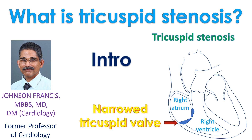Tricuspid stenosis is narrowing of the valve between the right atrium and right ventricle. The tricuspid valve prevents backflow of blood into the right atrium when the right ventricle contracts. The right atrium is the upper chamber which receives blood returning from the whole body. The right ventricle, the lower chamber, receives blood from the right atrium through the tricuspid valve and pumps it to the lungs through the pulmonary artery.